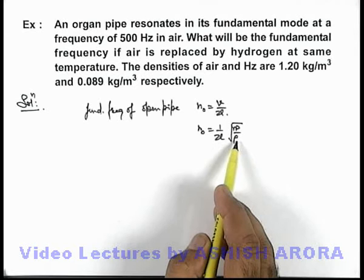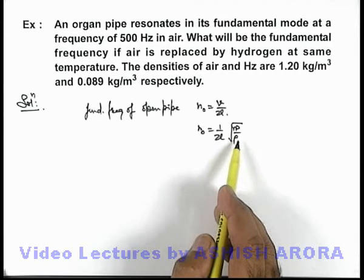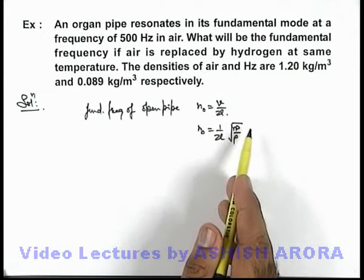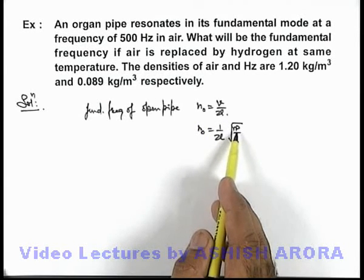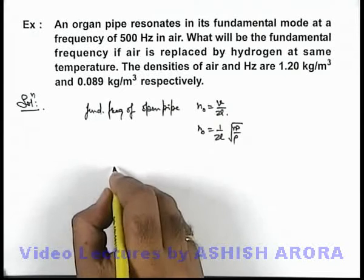Now in this situation, if we talk about air and hydrogen, both can be treated as diatomic gases, so for both of these the values of gamma and p are approximately the same. So from here we can see,